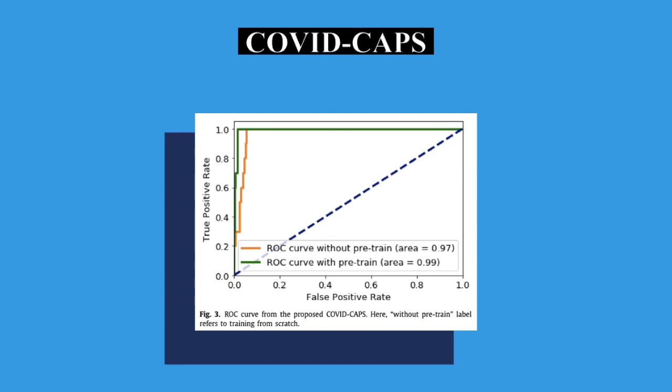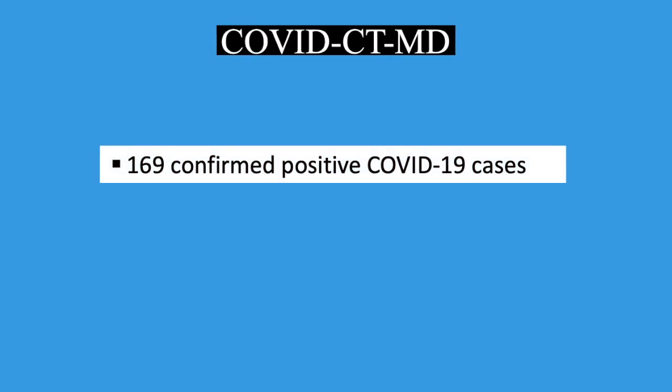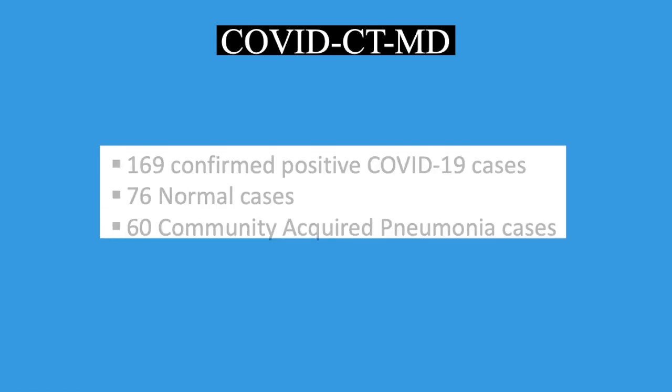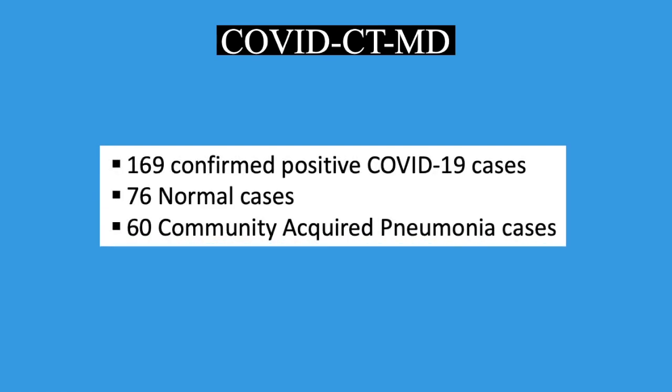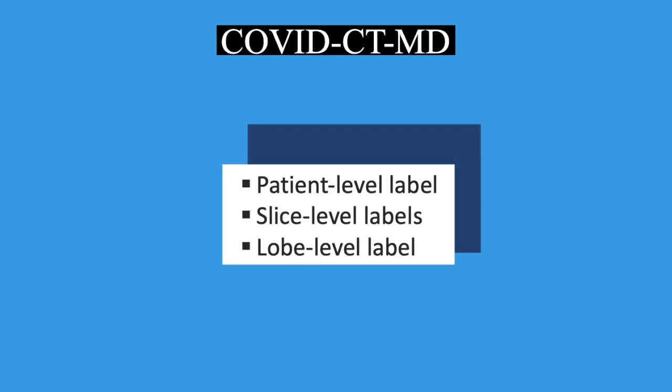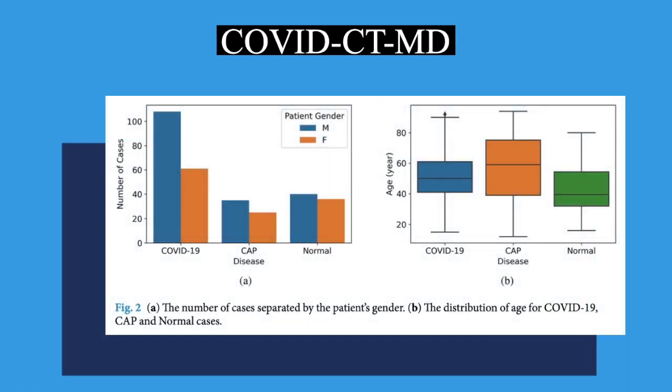To facilitate the application of machine learning and deep neural networks for COVID-19 diagnosis, we designed the COVID-CTMD dataset. The dataset consists of 169 confirmed positive COVID-19 cases, 76 normal, and 60 community-acquired pneumonia cases. The dataset is specifically designed with patient-level, slice-level, and lobe-level labels. Moreover, the whole CT volume is available. The distribution of the patients' gender and age is represented in the following graphs.